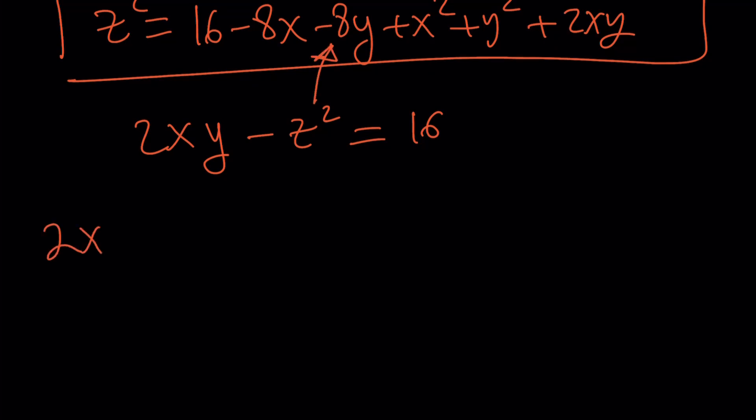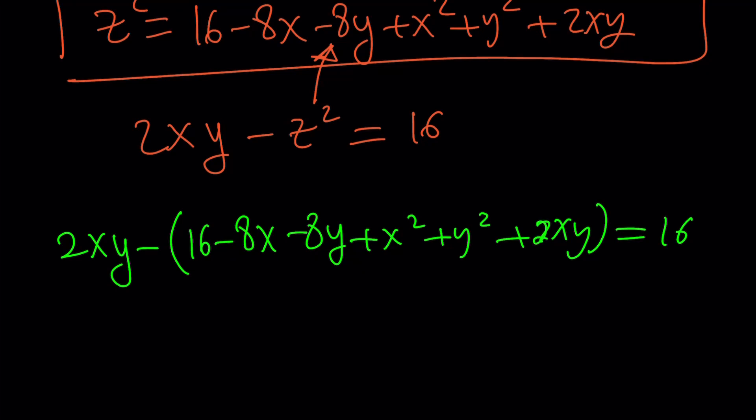16 minus 8x minus 8y plus x squared plus y squared plus 2xy. So this whole thing is equal to z squared. Let's go ahead and plug it in here. Let's rewrite that equation: 2xy minus z squared equals 16. And then, what are we going to do with this? Replace z squared with this gigantic expression.